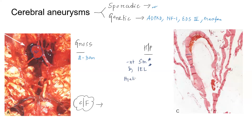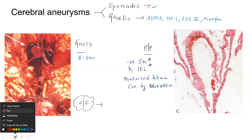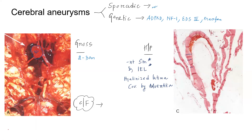The hyalinized intima is covered by adventitia. Due to the absence of smooth muscles and internal elastic lamina, there will be hyalinization of the intima, and it will just be covered by a layer of adventitia. So absence of smooth muscles and internal elastic lamina — this is what you are going to get in histopathology.